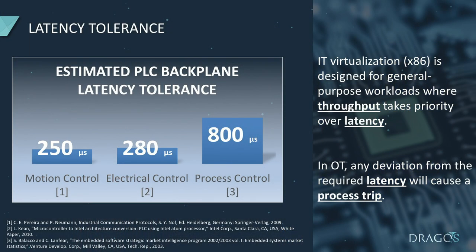There have been studies estimating backplane latency tolerance per industry. One of the fastest latency tolerances is the motion control industry — robotic arms swinging around need to be monitored at a very high frequency — so those are only tolerant at 250 microseconds. Electrical control is a little higher at 280 microseconds. And process control, like water systems or oil and gas, is much higher at 800 microseconds.